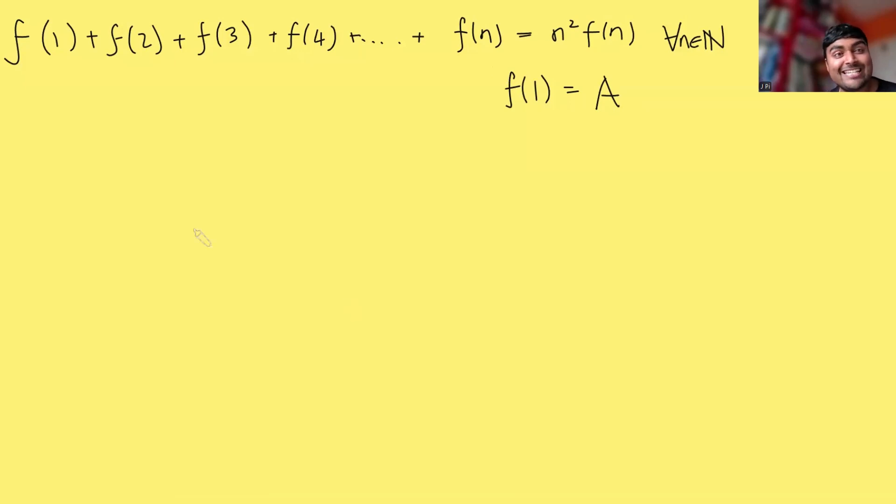Here we have a function f which takes in positive integers and we want to know what the function is explicitly because we're only given it as this really weird sum. It has the property that f(1) + f(2) + f(3) and so on up to f(n) equals n squared times f(n) and this is supposed to be true for every single positive integer n.